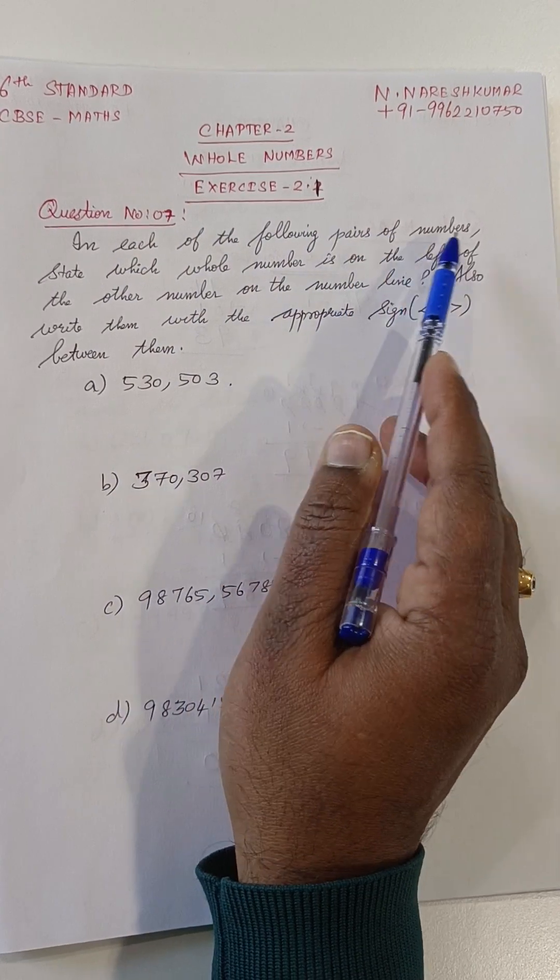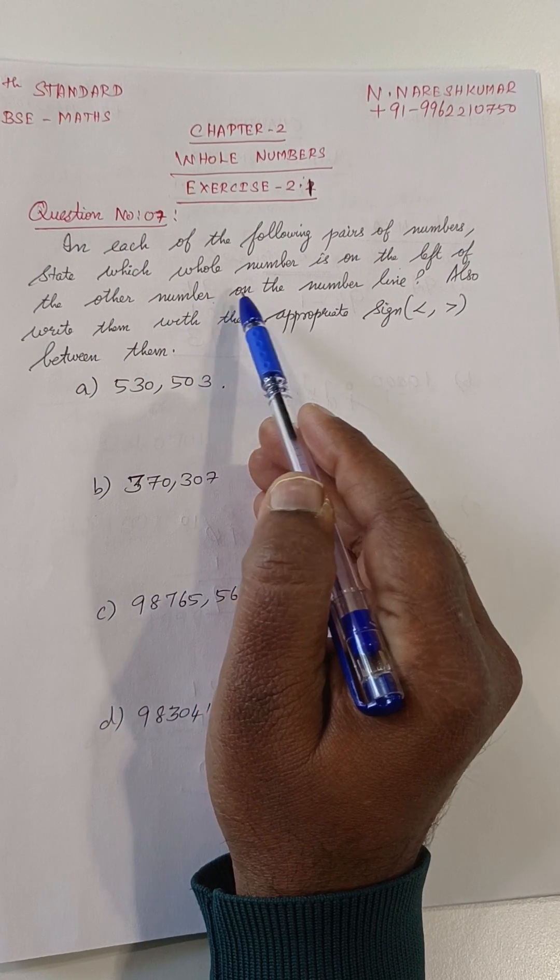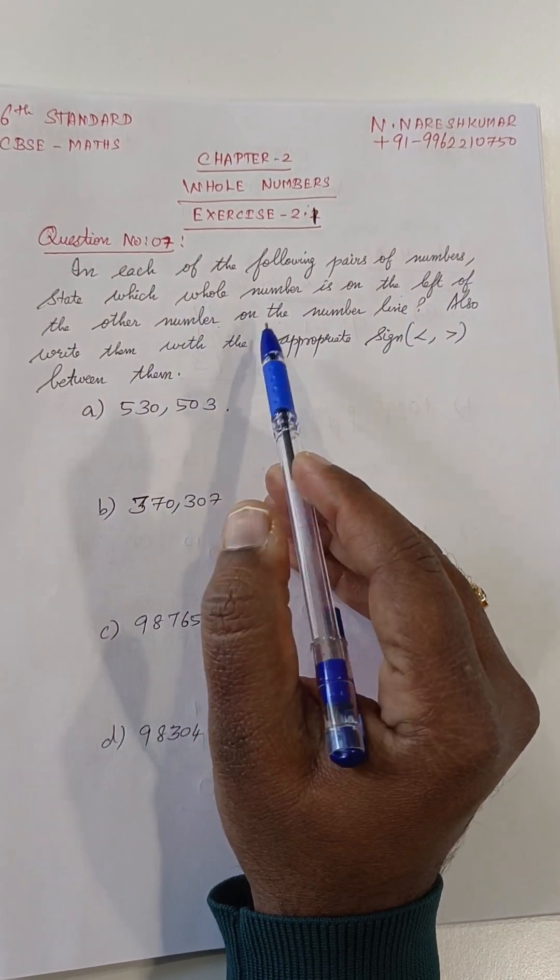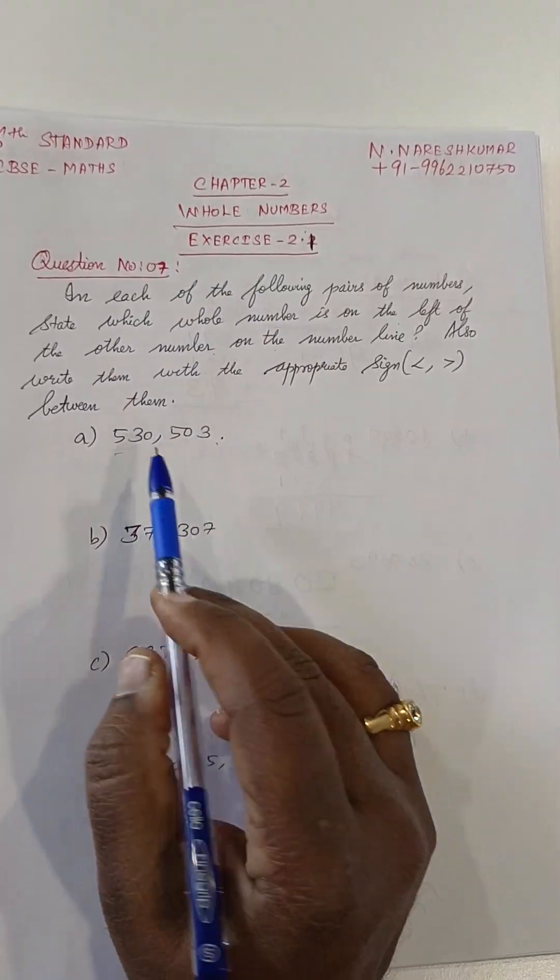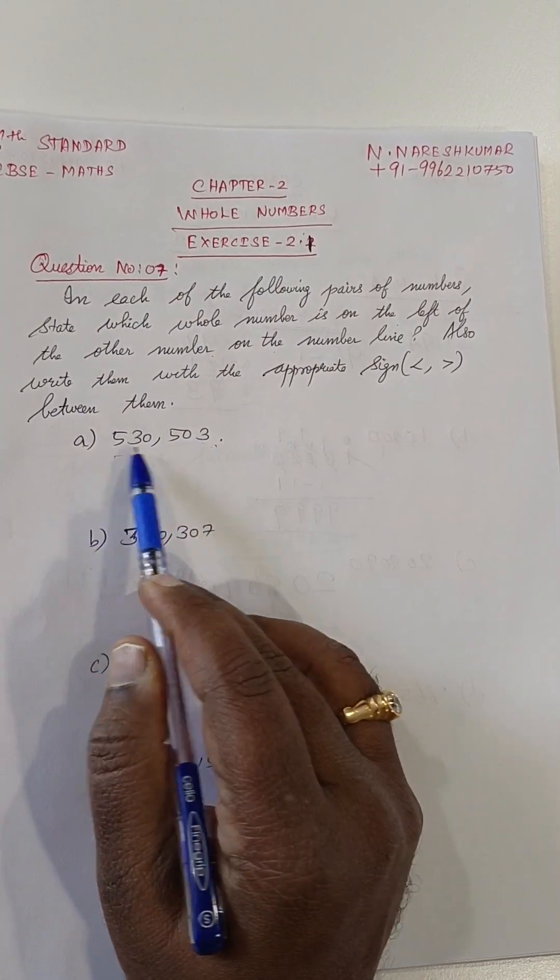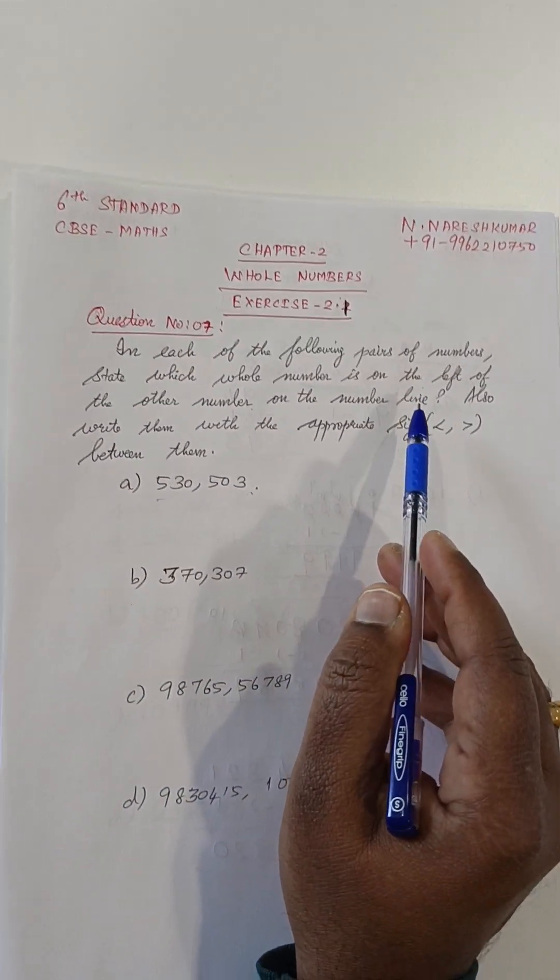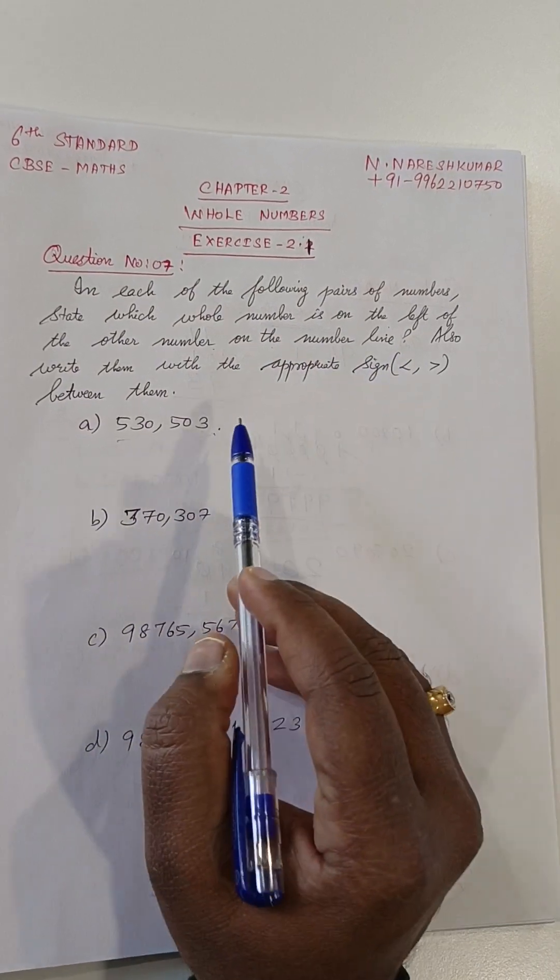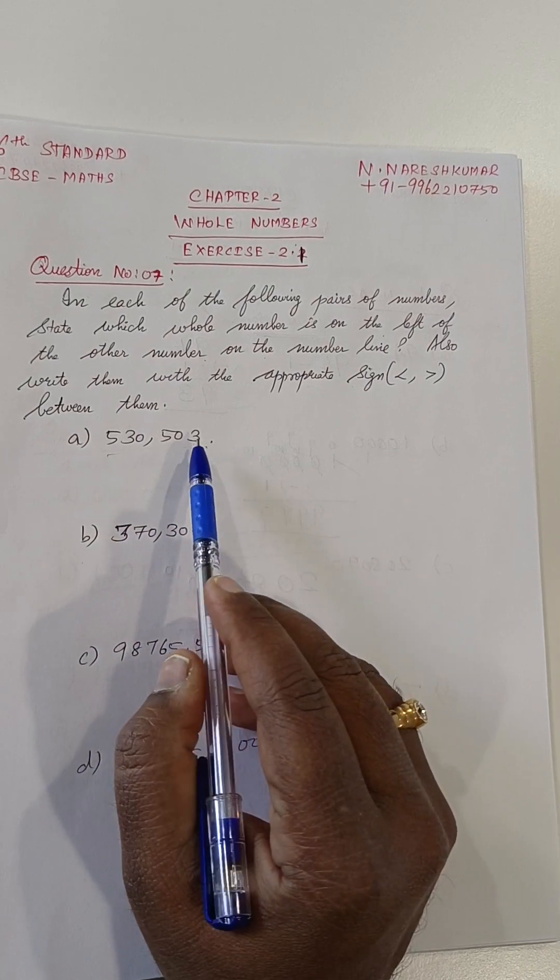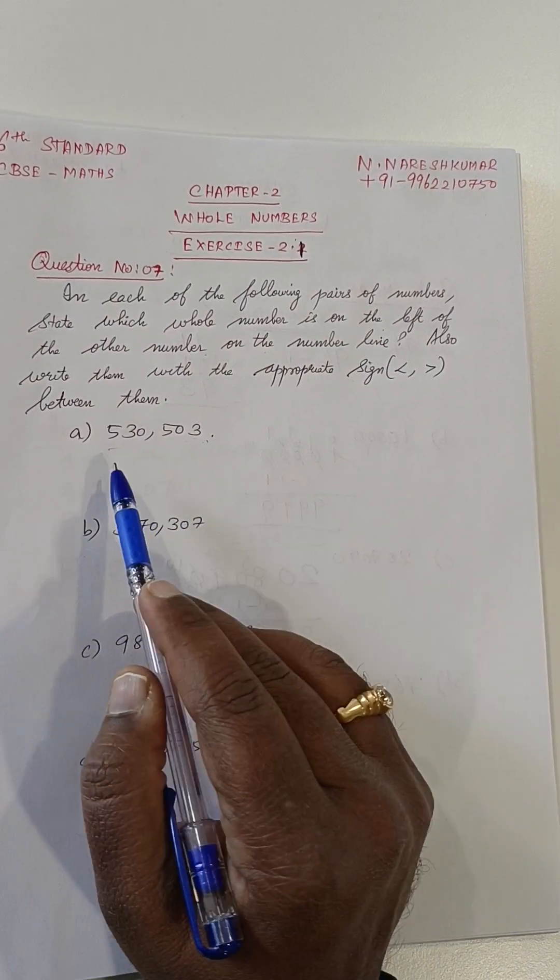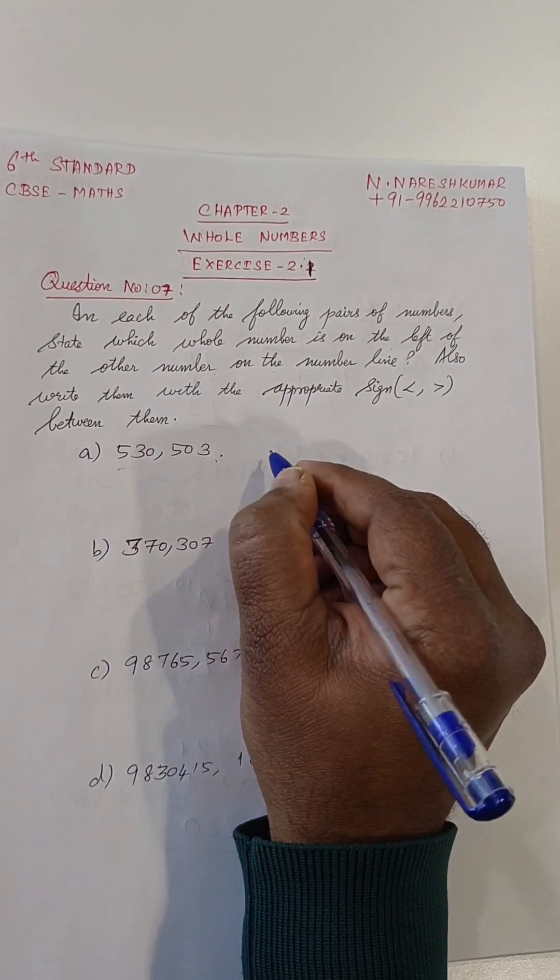In each of the following pairs of numbers, state which whole number is on the left of the other number on the number line. That is, they are asking that they have given a pair of numbers. Pair means two. Two numbers they have given, and in these two numbers they are asking, please find the left of the other number on the number line. By how? Write them with the appropriate sign between them. So, they are asking which number will be coming first. So, what? First we will write the sign.